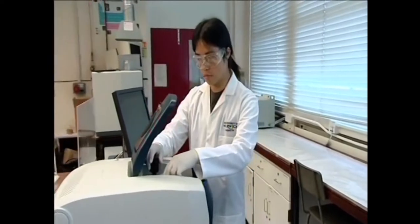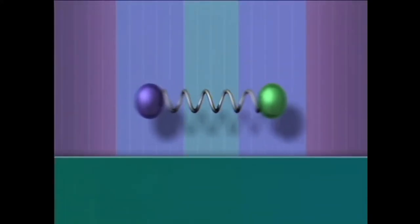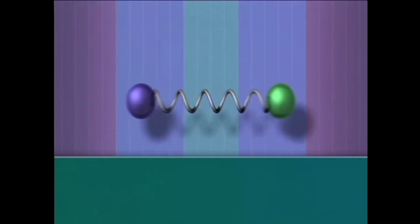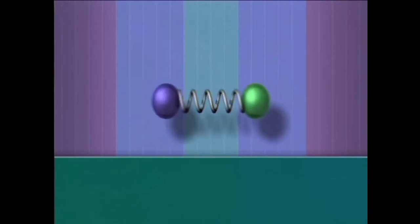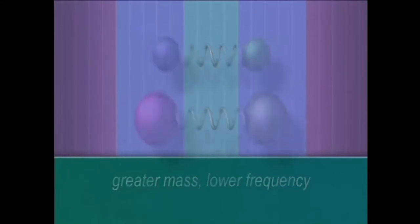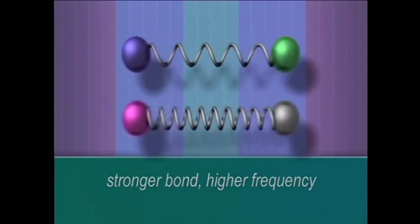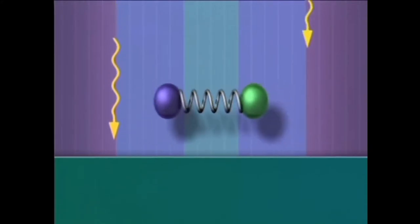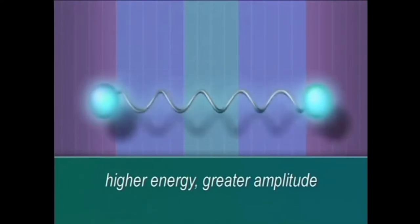Infrared spectrometry helps chemists identify the functional groups present in a compound and can help find the structure. A pair of atoms joined by a covalent bond can be thought of as balls on the end of a vibrating spring. The bond can vibrate with different amounts of energy at a frequency that depends on the masses of the atoms and the strength of the bond. Lighter atoms give higher frequencies; heavier atoms move more slowly and give lower frequencies.